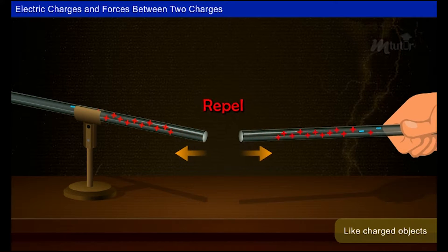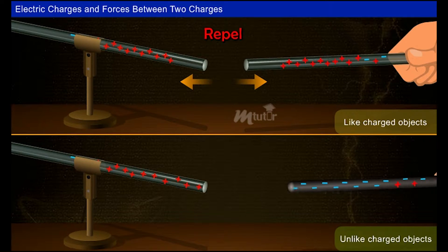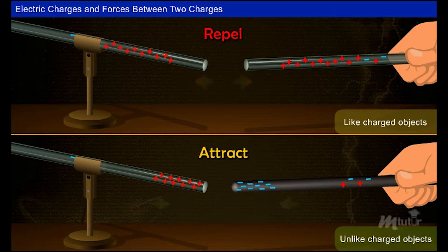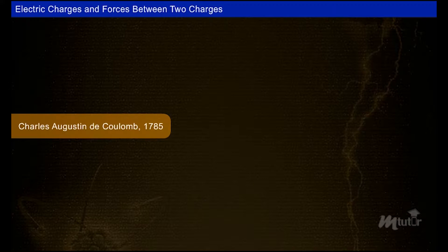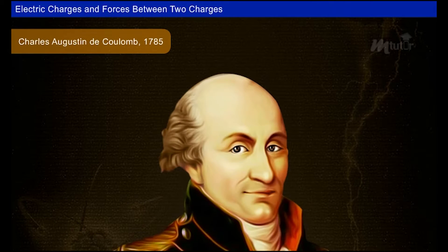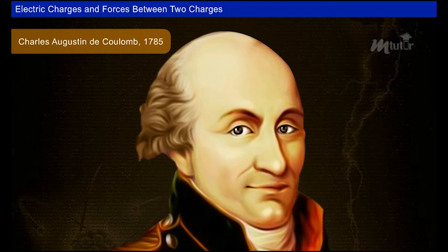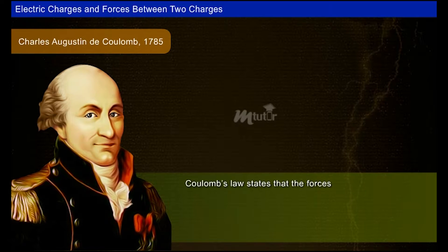It is observed that like charged objects repel each other and unlike charged objects attract each other, so there is a force that exists between charged particles. In 1785, Charles Augustin de Coulomb, a French physicist, gave the mathematical relation for the forces between two electrically charged bodies.